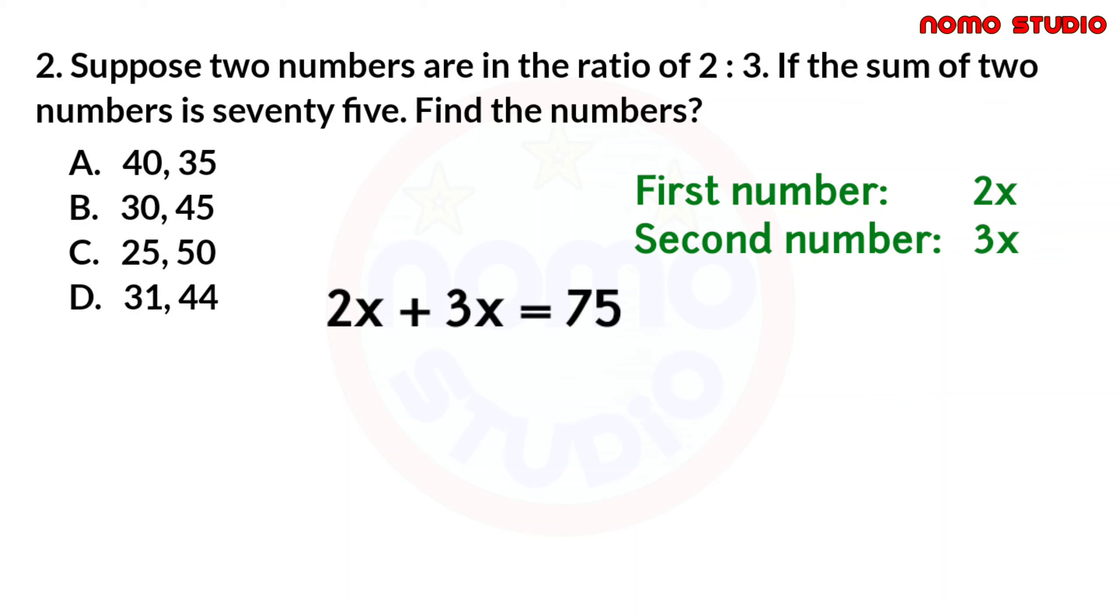As we can see, we now have an algebraic equation. What we need to do is to solve for the value of x. So, 2x plus 3x equals 5x, equals 75. Now, let's divide 5 on both sides. So, divided by 5, divided by 5. Our x is equal to 15, since 75 divided by 5 is 15.